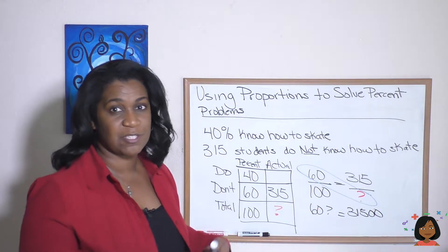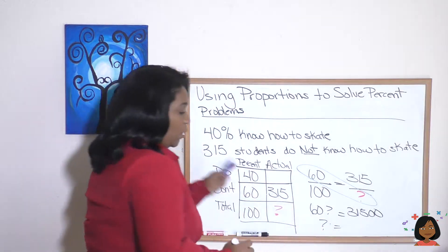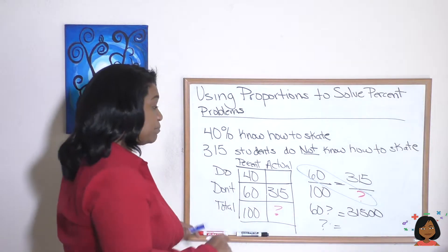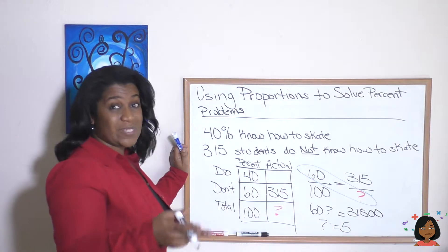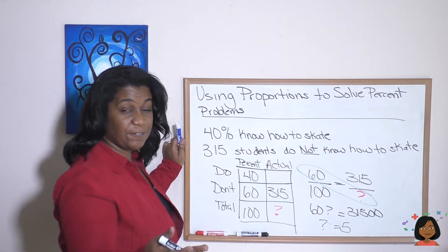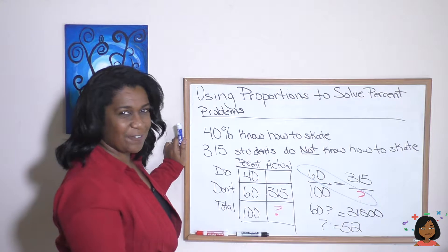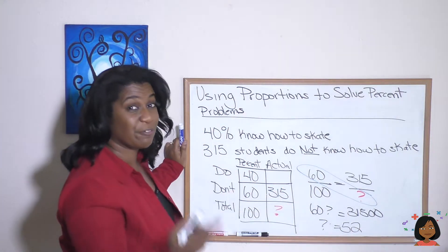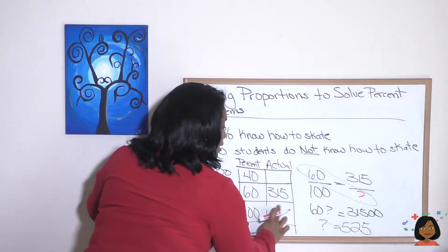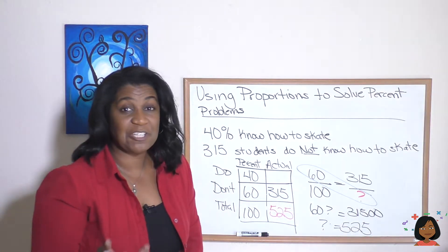So 60 into 31,500. 60 cannot go into 3, cannot go into 31, but it can go into 315 — it goes five times, leaving 15. Bring down the zero: 150. 60 goes into 150 two times, that's 120, leaving 30. Bring down the last zero: 60 into 300 is five. So the total number of students in the class is 525.